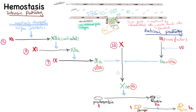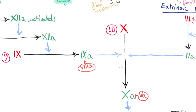We arrive at the step of converting factor 10 to its active form 10a, but activated tissue factor cannot do this alone — it needs the help of activated factor 7a as a cofactor. The rest is identical to the intrinsic pathway: 10a with the help of 5a activates the conversion of prothrombin to thrombin, and thrombin activates the conversion of fibrinogen into fibrin.